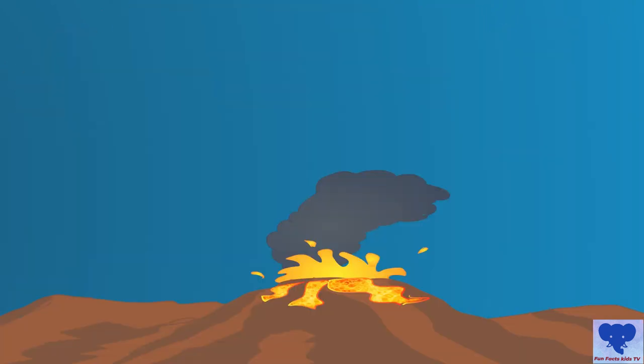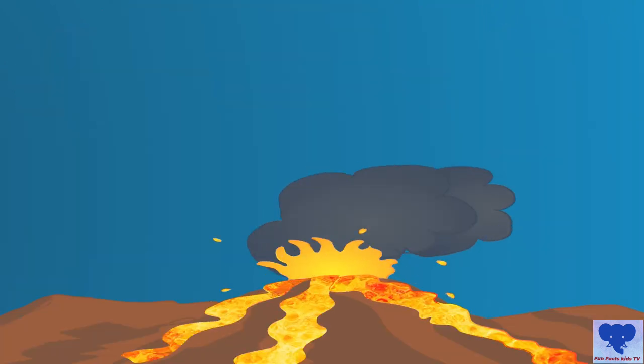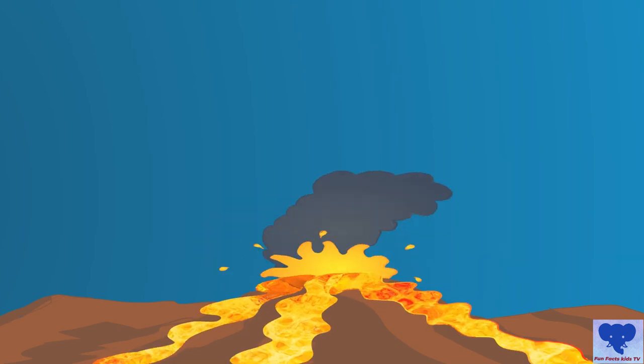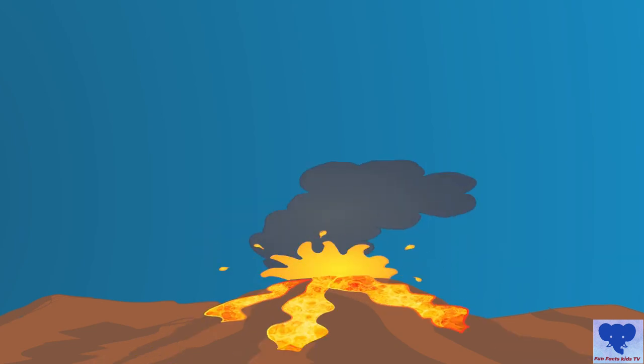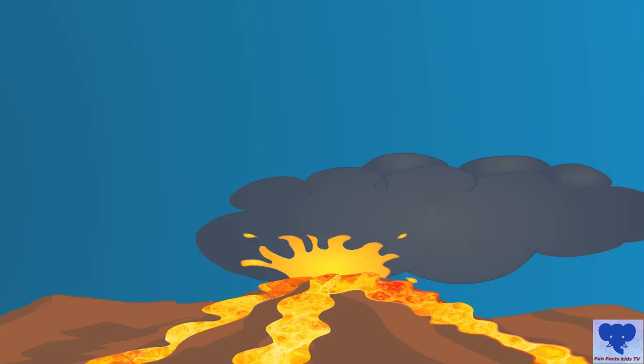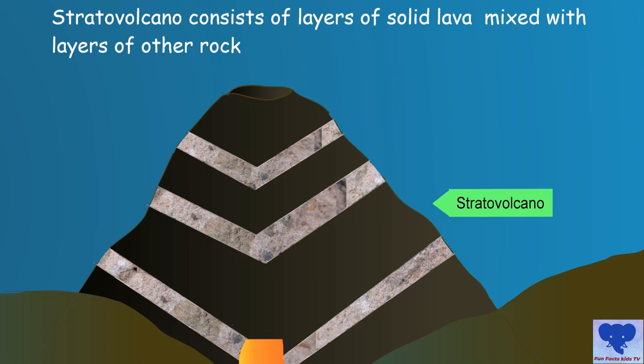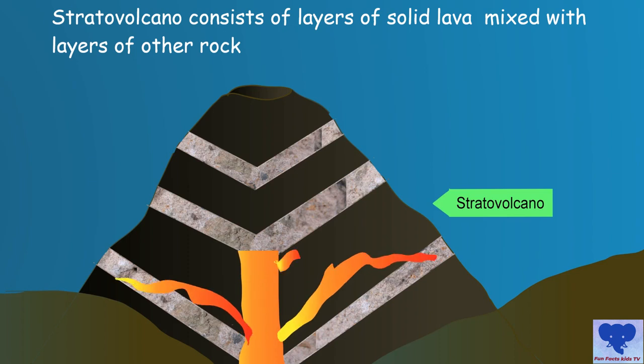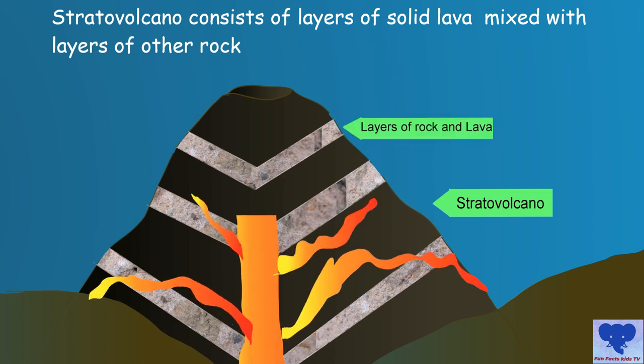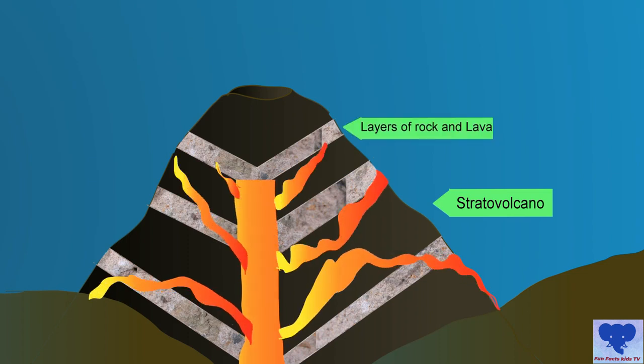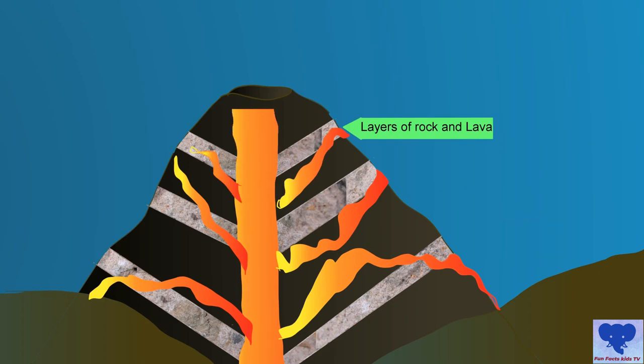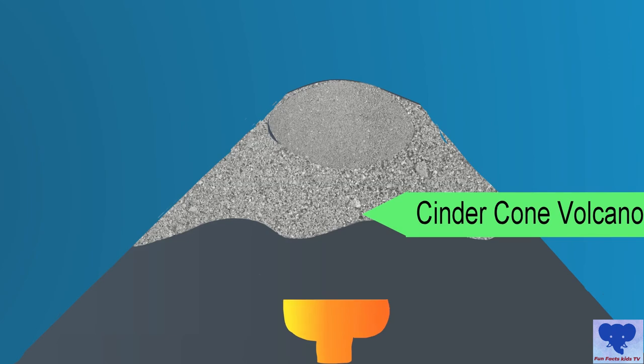But not all volcanoes are alike. There are three main types of volcanoes. Stratovolcano, or composite volcano, is a conical volcano consisting of layers of solid lava flows mixed with layers of other rock.